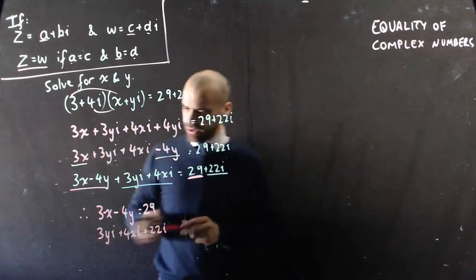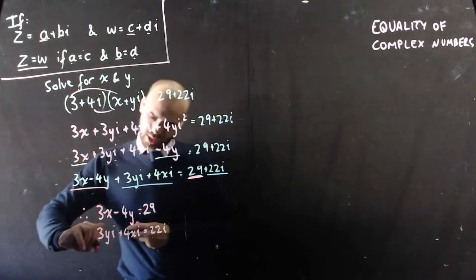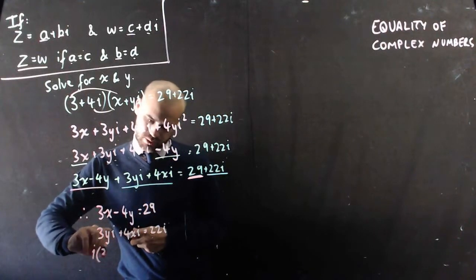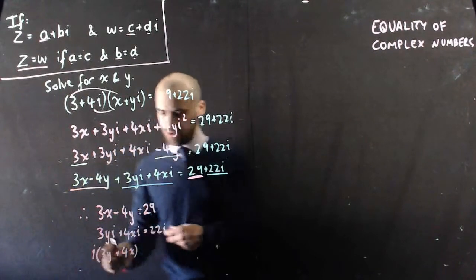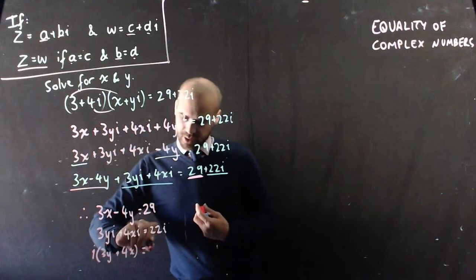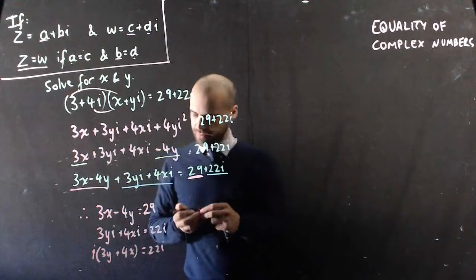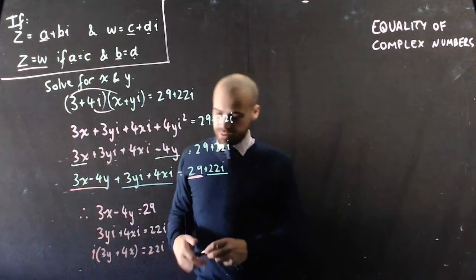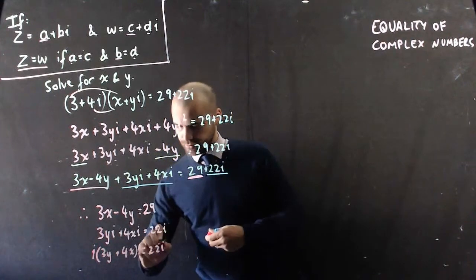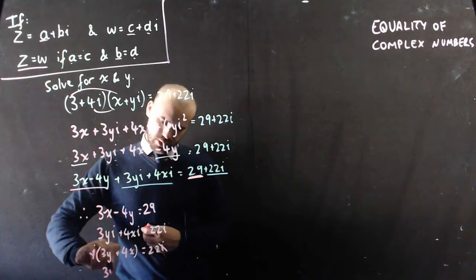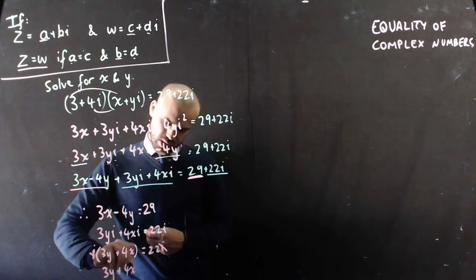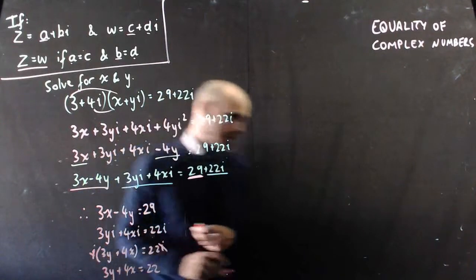But I could rewrite that as i times (3y + 4x), taking i out as a common factor. I can call that 22i. And then I can divide both sides by i. And I have a nice little equation, 3y + 4x = 22.